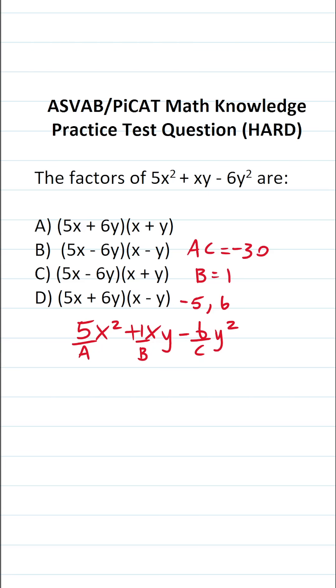-5 times positive 6 is -30, and -5 plus 6 is positive 1. We're going to take these two numbers and replace this middle term with them such that this becomes 5x² - 5xy + 6xy - 6y². Now that we've done that, we're going to factor this one via grouping.